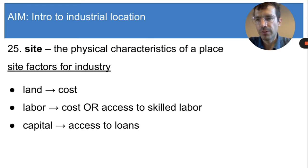So these are the three site factors for industry: land, labor, and capital. Take a moment and commit them to memory.